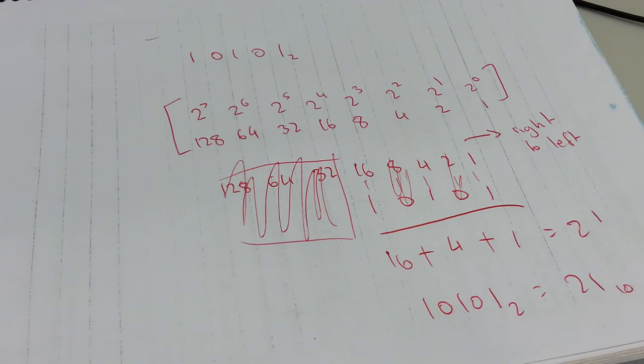And that's how you convert from binary to decimal using positional notation. That's it for this tutorial, I'll see you guys in the next tutorial. Thanks for now.